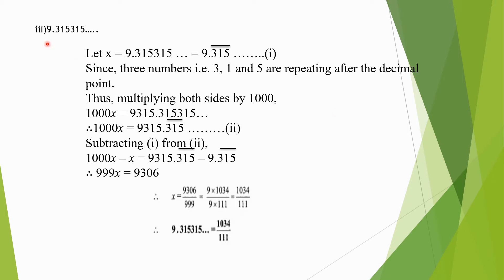Third question: 9.315315 and so on. Let us suppose 9.315315... is equal to 9.315 bar — when 315 is repeating again and again we write 315 bar. Let this be equation No. 1. Since here again 3 numbers, that is 3, 1 and 5, are repeating after the decimal point, we will multiply both sides by 1000.